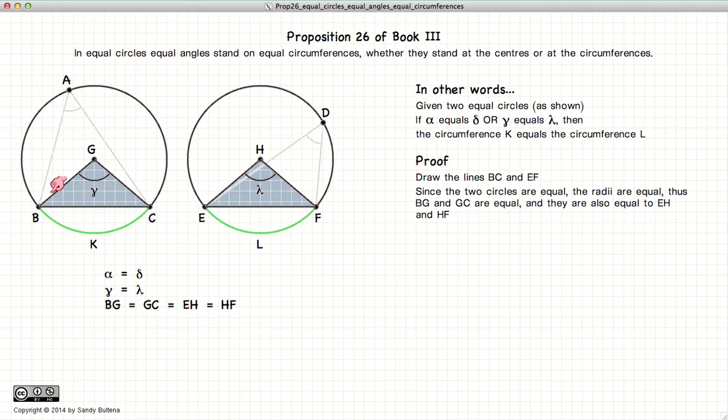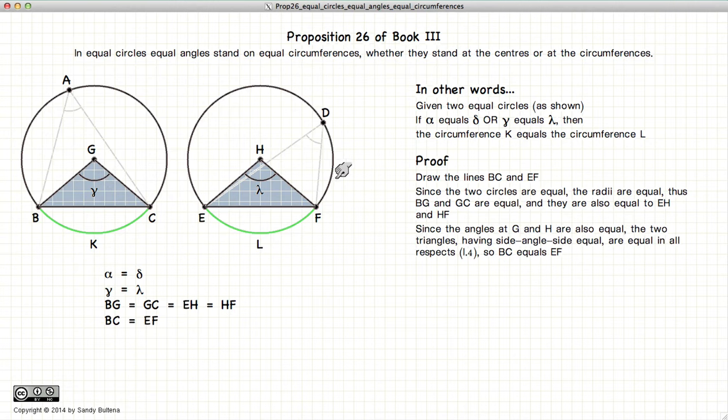We have a side-angle-side equal to a side-angle-side. So, according to Proposition 4 of Book 1, we have that the two triangles are equal in all respects, or in other words, BC is equal to EF. So, remember that BC is equal to EF.